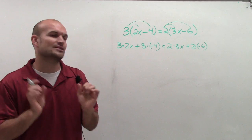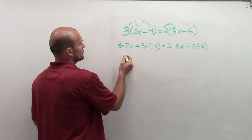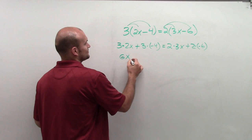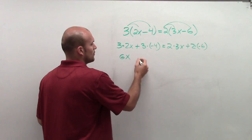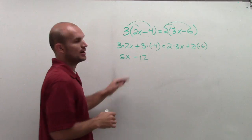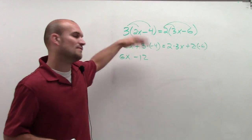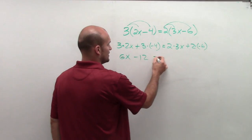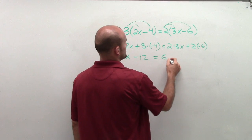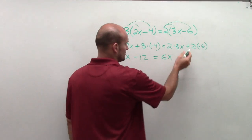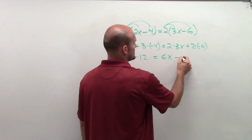3 times 2x is 6x. Positive 3 times negative 4 is a negative 12. So instead of writing plus and negative 12, I'm just going to write subtract 12. Equals 2 times 3x, which is 6x. Plus 2 times negative 6 is negative 12.